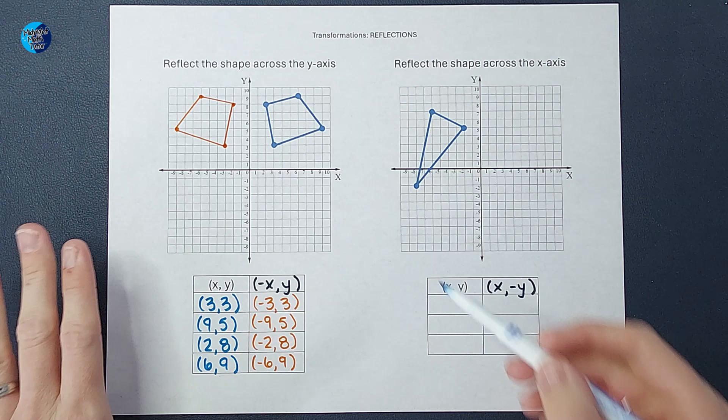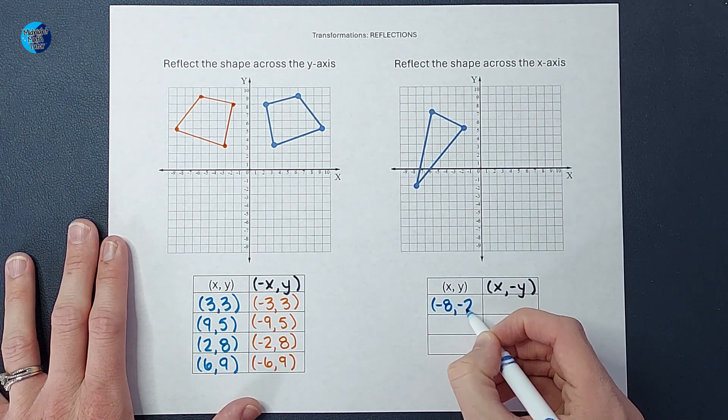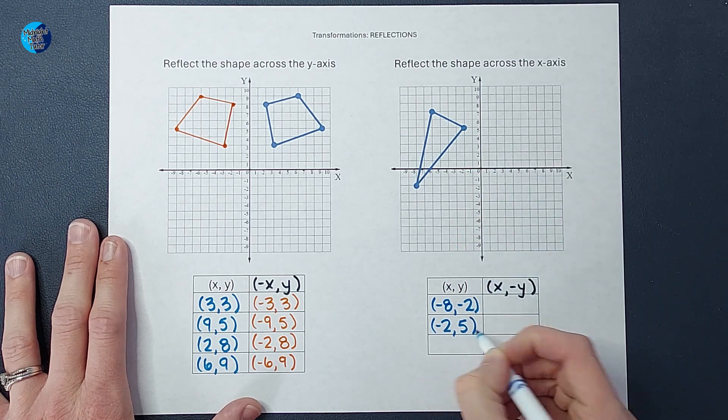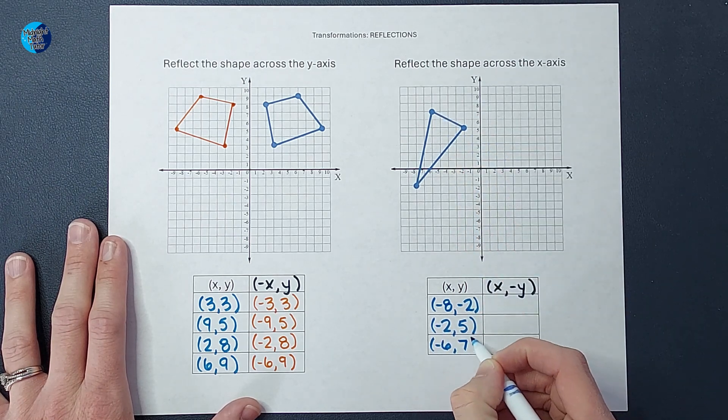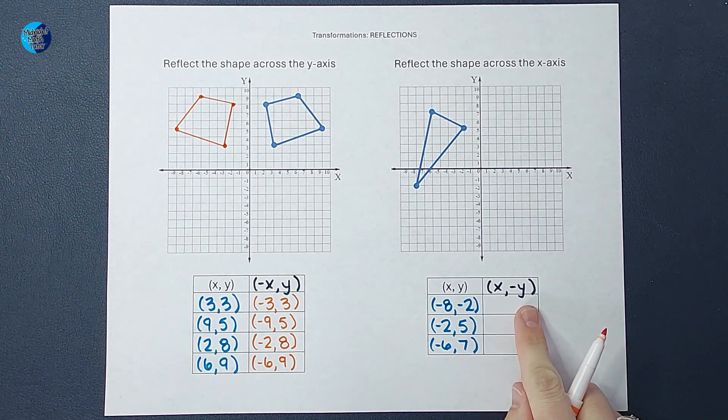Using those ordered pairs, that will reflect it over the x-axis. So I'm going to figure out these three original points. Okay, there are those original points.